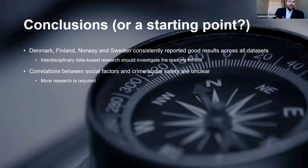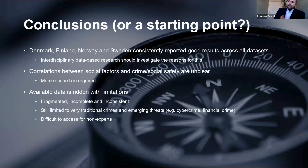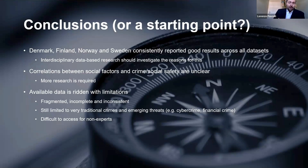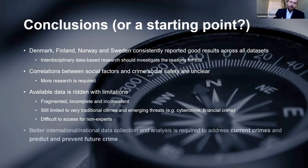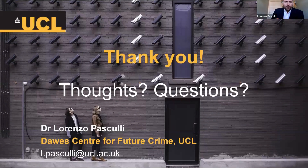Correlations between social factors and crime and social safety are still unclear even when comparing all these data sets. More research is needed. Another major point: despite living in the 21st century, data about crime is still very poor — fragmented, inconsistent, incomplete, and limited to traditional crime, with very little on online crimes or fraud, and not publicly accessible. My main policy recommendation is to invest more in data collection and analysis.